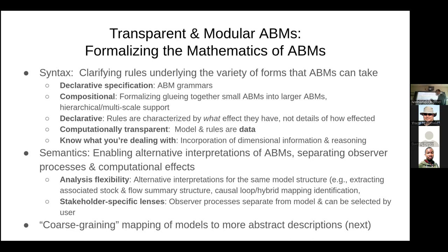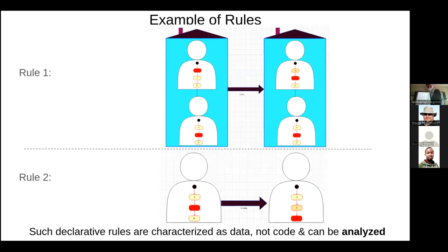You could support compositional agent-based models — sticking them together. You're characterizing rules by what they accomplish rather than the details of how they carry it out. You're looking for something computationally transparent so that the rules are data — the model itself is characterized not as code but as data. That allows you to reason about it and allows the software to speed it up by recognizing that certain things can be done in better ways. You can incorporate dimensional information. The idea is you should be able to specify rules that say, for example: if within a home you have two agents — one susceptible, one infected — with a certain rate per day, the susceptible one will transition from S to I.